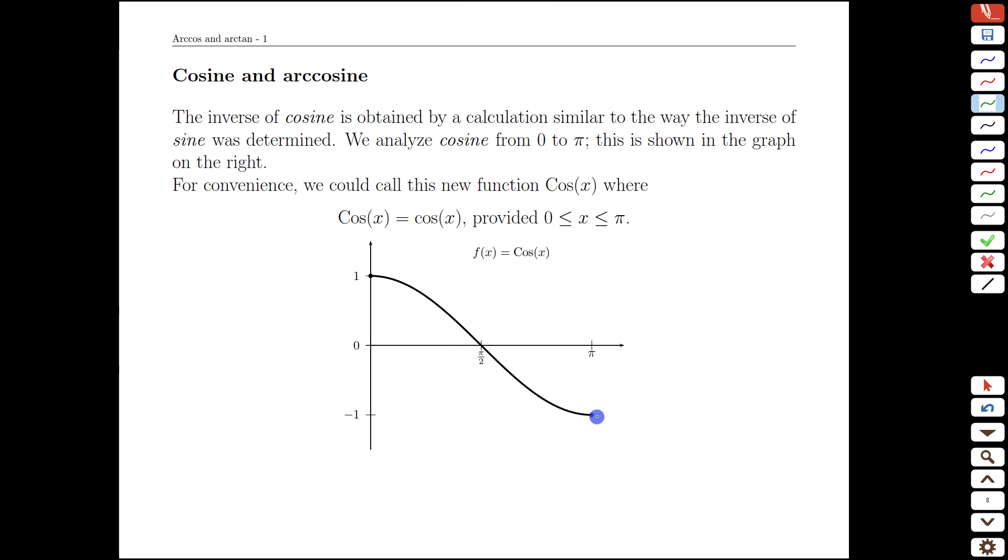Same idea as the sine function. If we continue the cosine function on, cosine starts at its peak then goes down, but it would come back up. However, if we restrict our domain to 0 to pi, then on that interval the cosine function passes the horizontal line test.